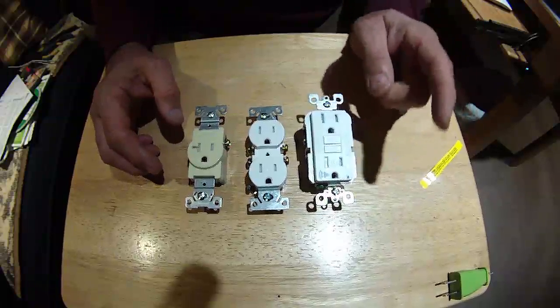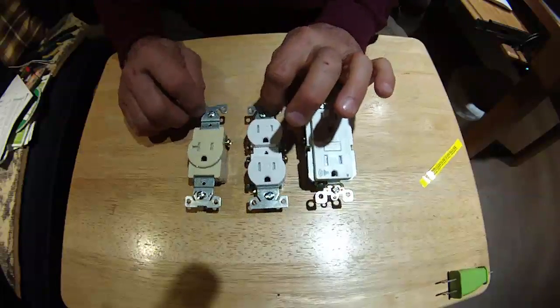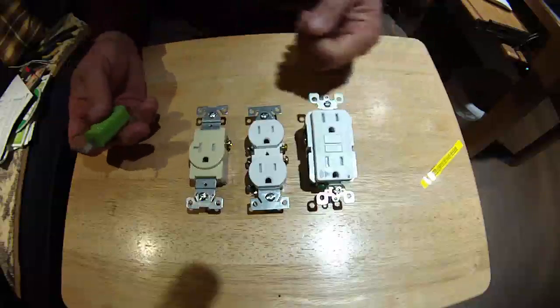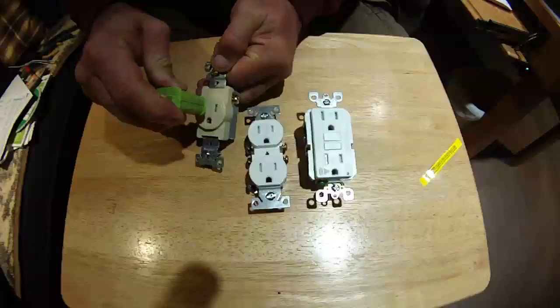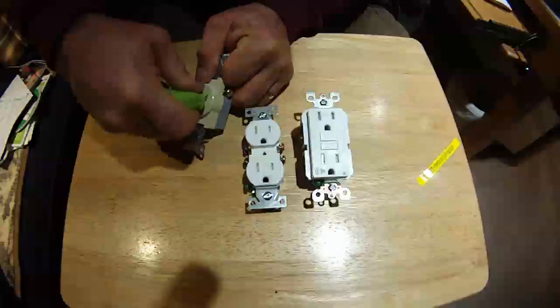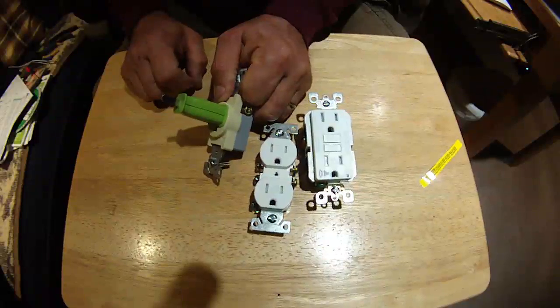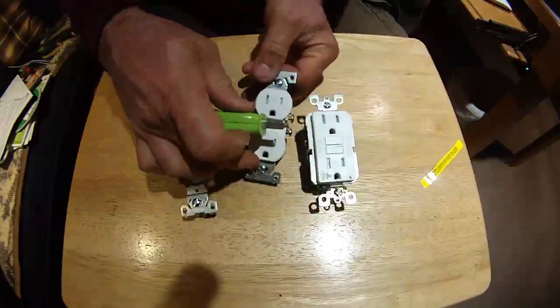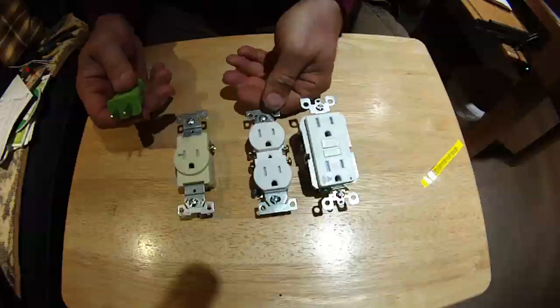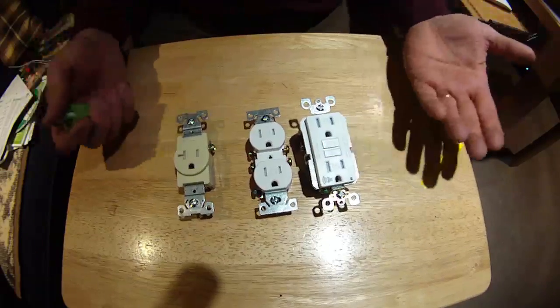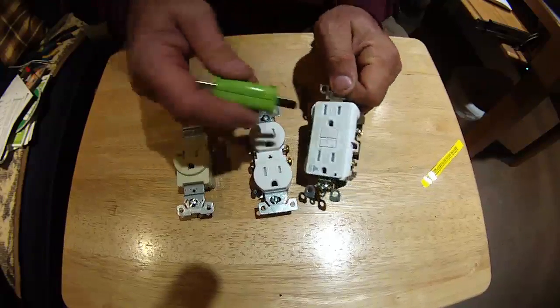Before we go, we want to talk about the new tamper-resistant features of these outlets. These are all TR receptacles. If a child comes up with a bobby pin or paper clip and tries to stick it in just one side, they can push as hard as they want - see how hard I'm pushing here, it won't go in. But if I come in with my plug, it'll go right in. So that's the safety feature with these: one outlet won't go in, but my device will. It's tamper resistance. We found that children have figured out how to pull out those little caps, but you can't defeat the outlet with tamper-resistant built into it.